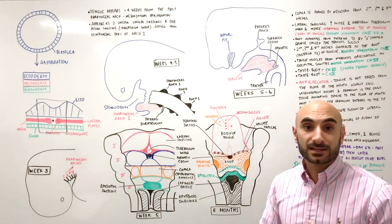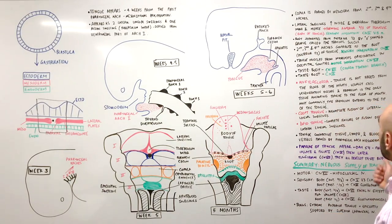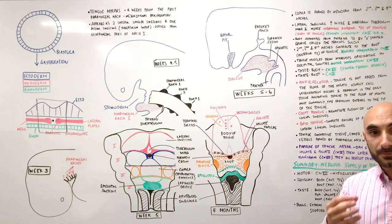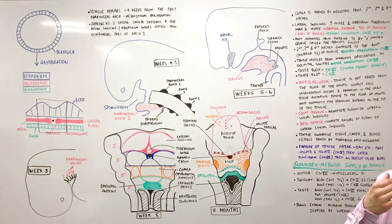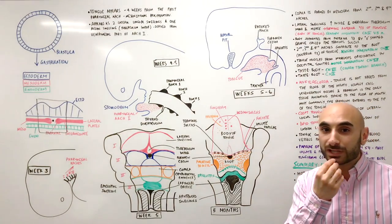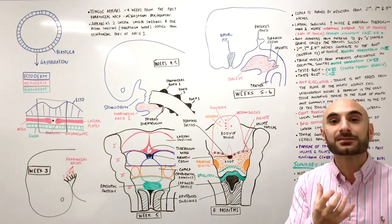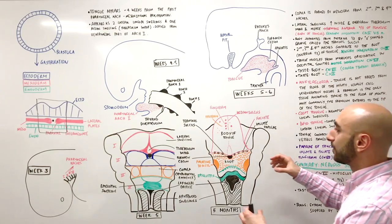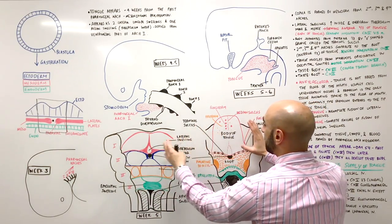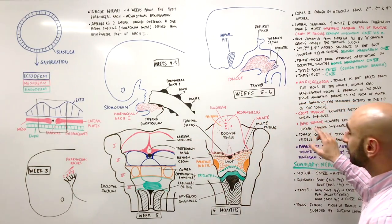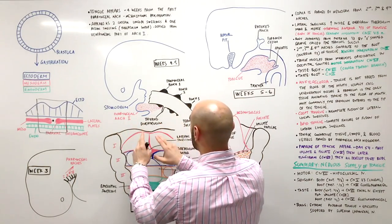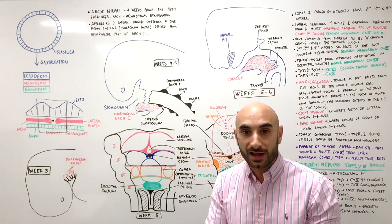What can go wrong? There is a condition called ankyloglossia, where the tongue isn't completely freed from the floor of the mouth. Normally, cell degeneration frees the tongue from the bottom of the mouth, but in ankyloglossia the frenulum extends all the way to the tip of the tongue, preventing free movement. You can also have a cleft tongue, where there is incomplete fusion of both lateral swellings. And there is a bifid tongue, a complete lack of fusion of both lateral swellings — essentially appearing as two tongues, or a forked tongue like a snake.